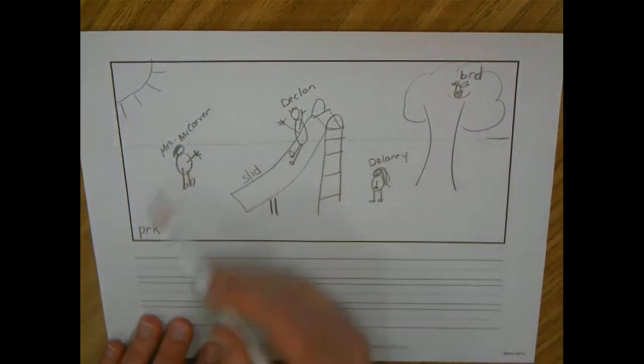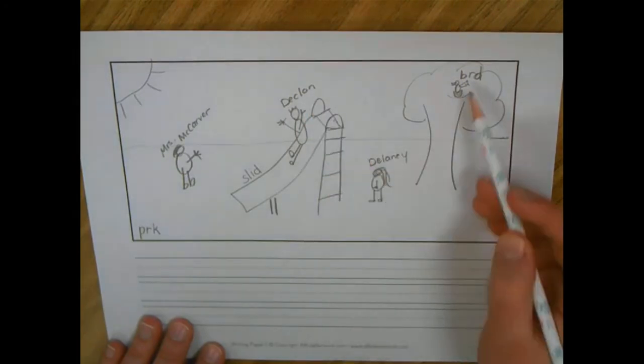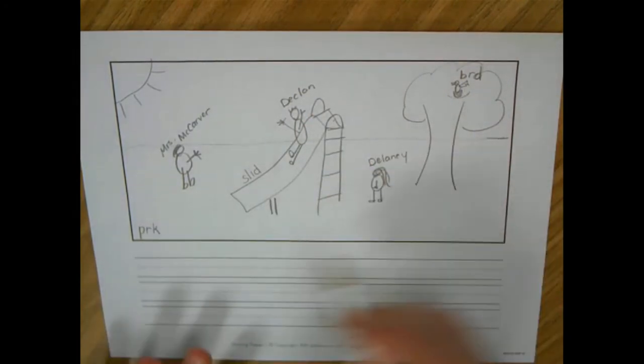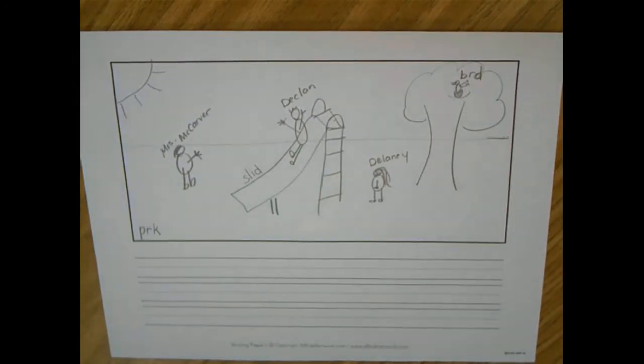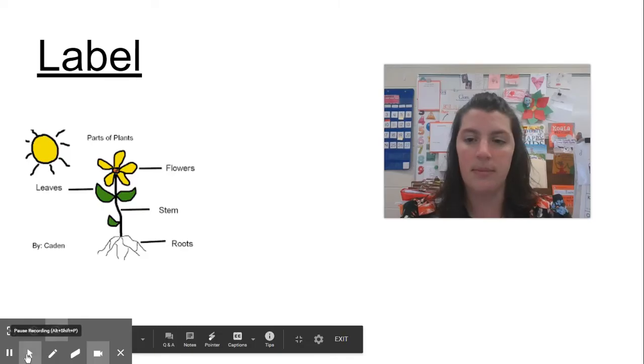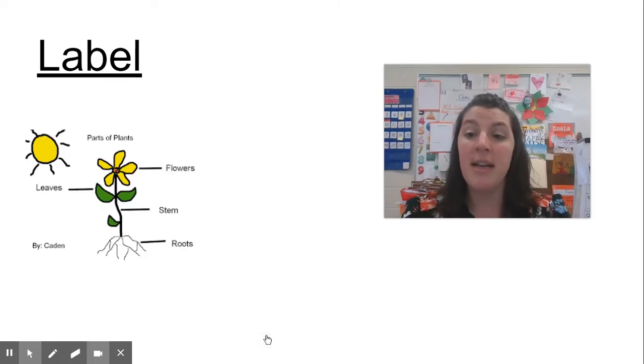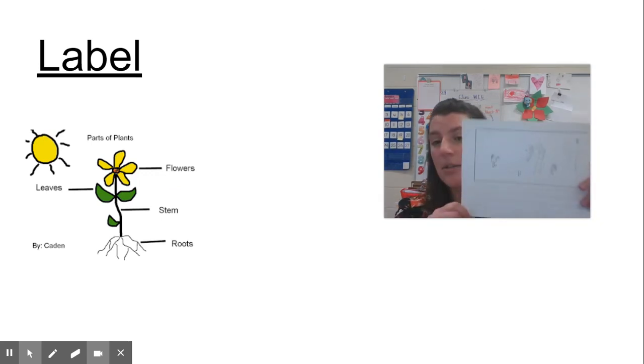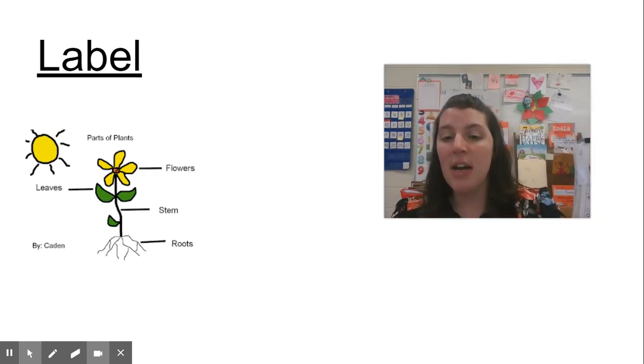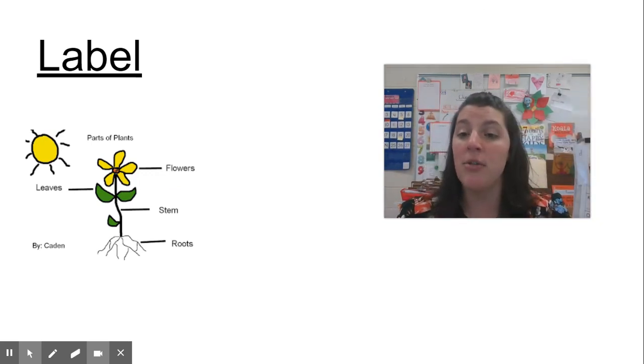So now I've thought about the important parts or details in my story, and I've worked on labeling those so they'll help me tomorrow. Okay, friends, now you saw me do some work labeling on my paper. So your job today is to get out that picture that you started yesterday and find the parts or details in your picture that are going to be important when you start writing the words. And I want you to try to add some labels to your paper, too.